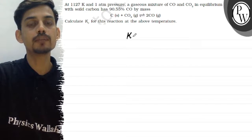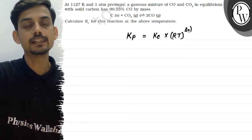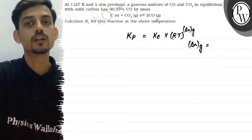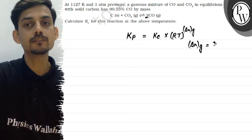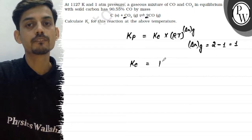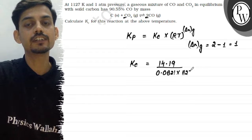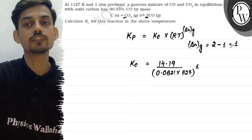We need Kc, so we use the relation Kp = Kc × (RT)^Δng. Here Δng is the moles of gaseous products minus moles of gaseous reactants. On the product side there are 2 moles of gas, and on the reactant side there is only 1 mole of gas, so Δng equals 1. Therefore Kc equals 14.19 divided by R (0.0821 atm·L/mol·K) multiplied by temperature 1127 Kelvin, to the power 1.